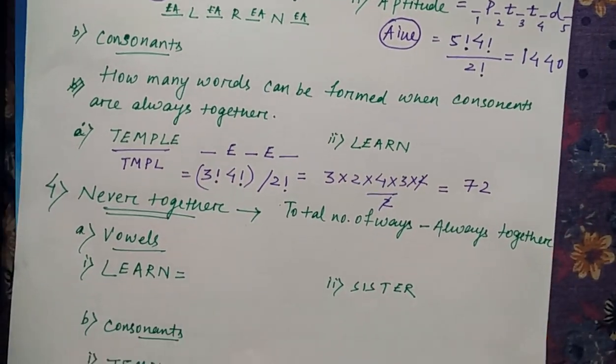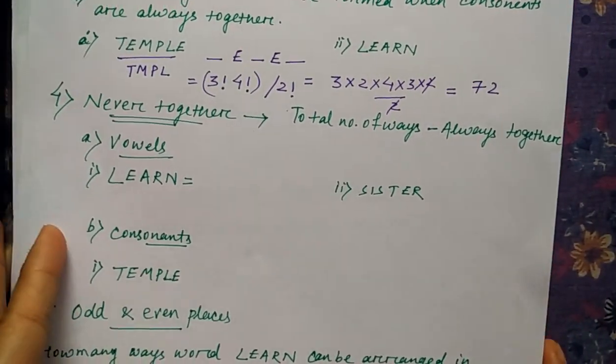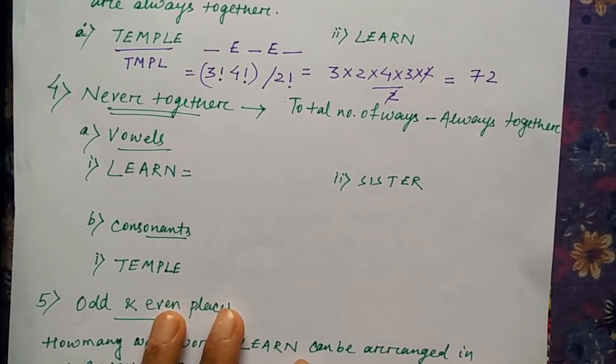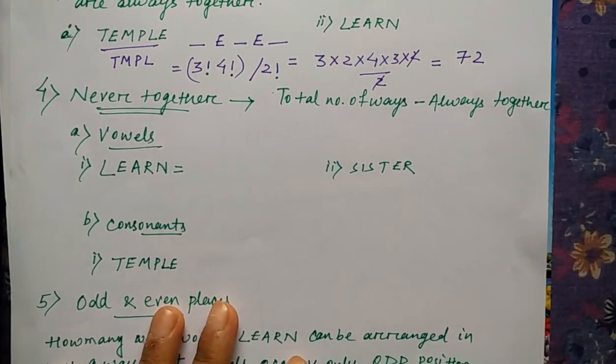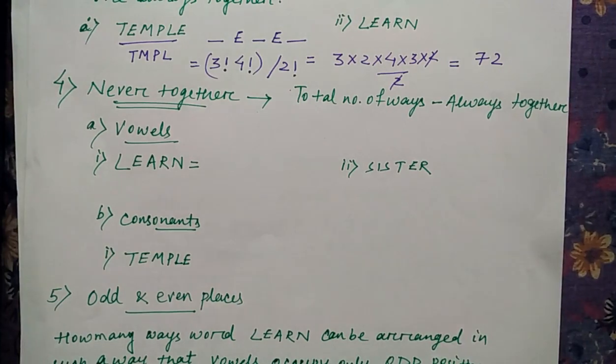Then we'll see a different type that is never together. What is happening in never together? Never together is in the sense total number of ways divided by always together. So the way you can arrange the word completely minus the word which you can keep always together. So we'll see.